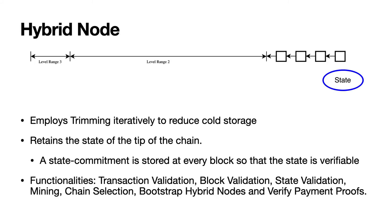Now we are ready to describe the operation of a hybrid node. The hybrid node applies trimming iteratively to reduce cold storage. It also retains the state at the tip of the chain, and a state commitment for the corresponding state is stored at every block. Therefore, the validity of the state at the tip of the chain can be verified even though the hybrid node does not store all transaction information — a similar idea to the one used in coin-true.